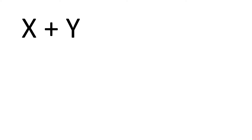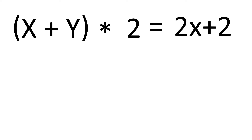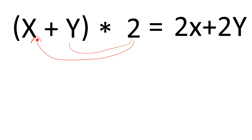Let's understand cross join in terms of mathematics. You have been given two variables x and y, and you have to multiply these two variables with two. The result would be 2x plus 2y — meaning the two first multiplies with x and then with y, giving results 2x and 2y.